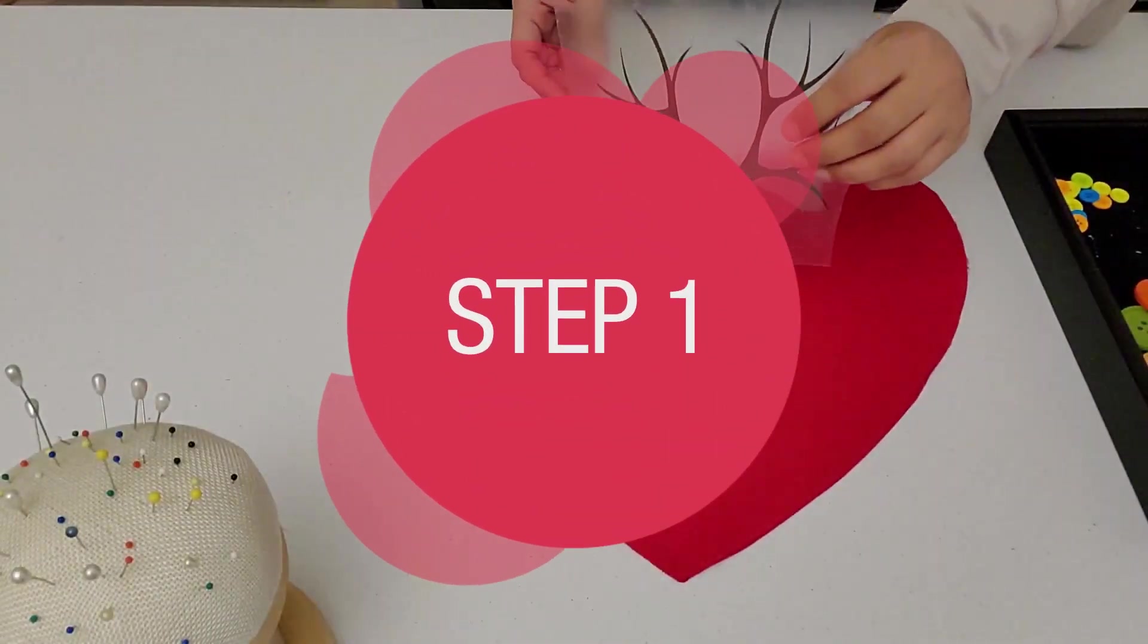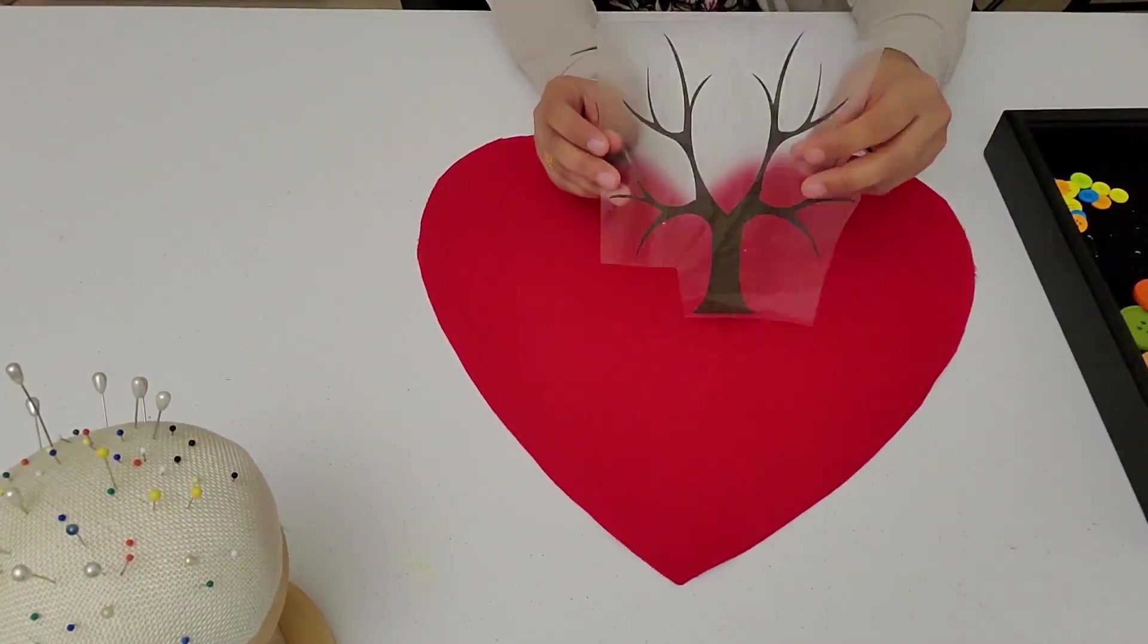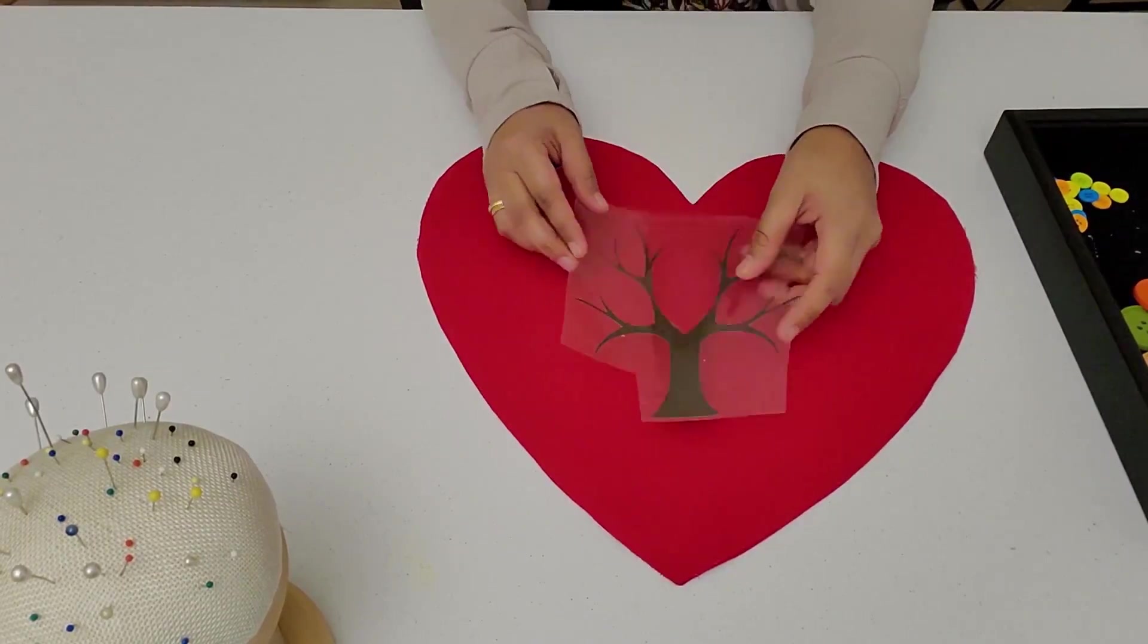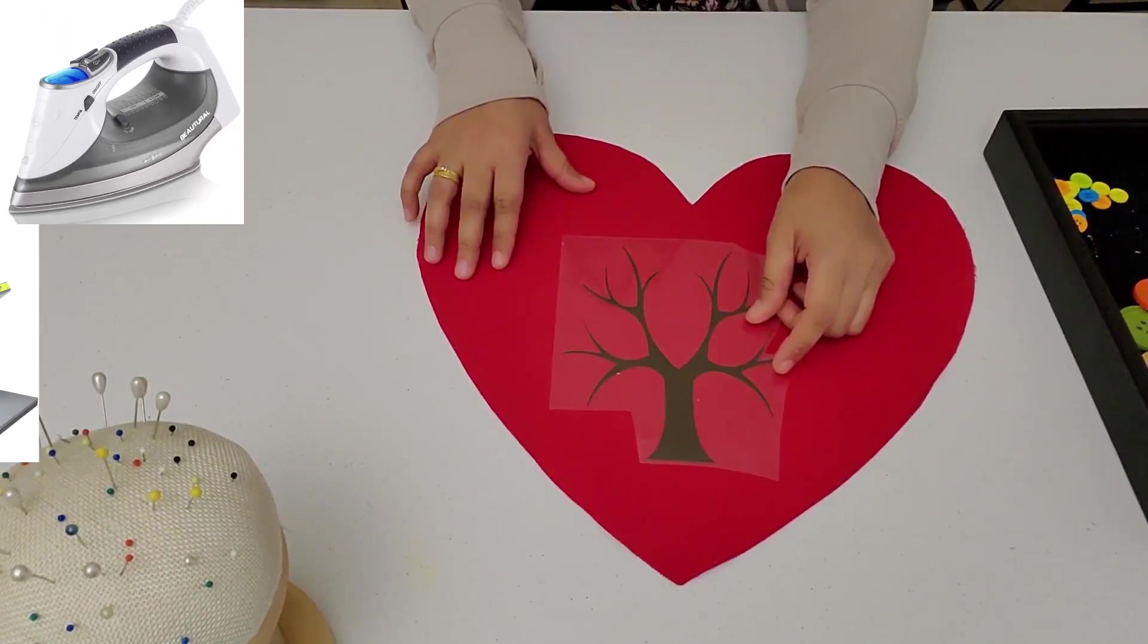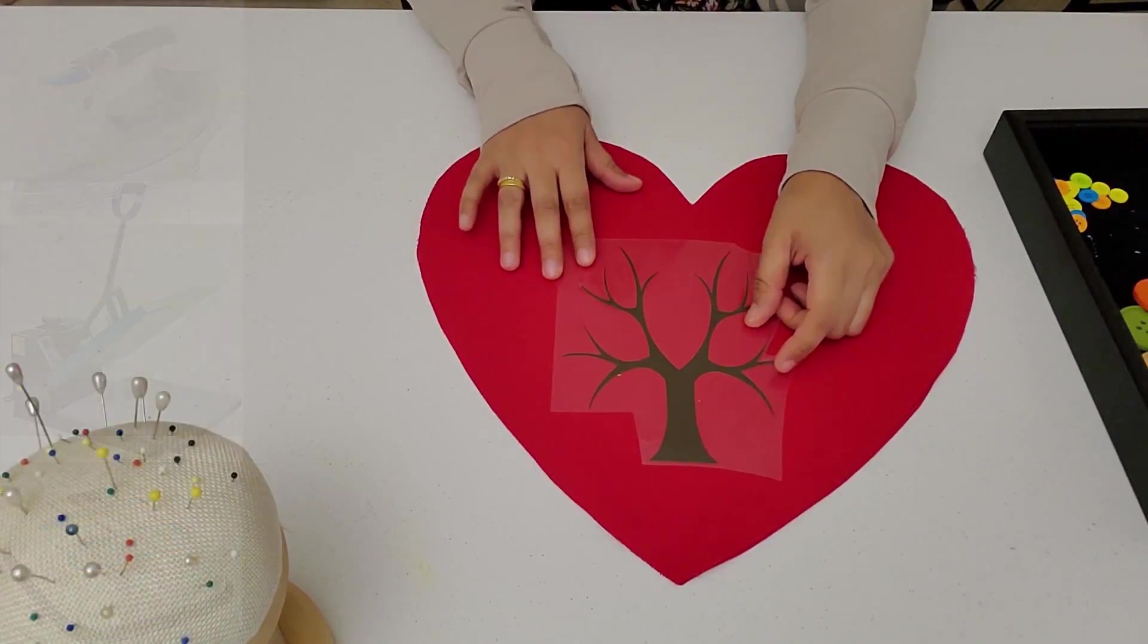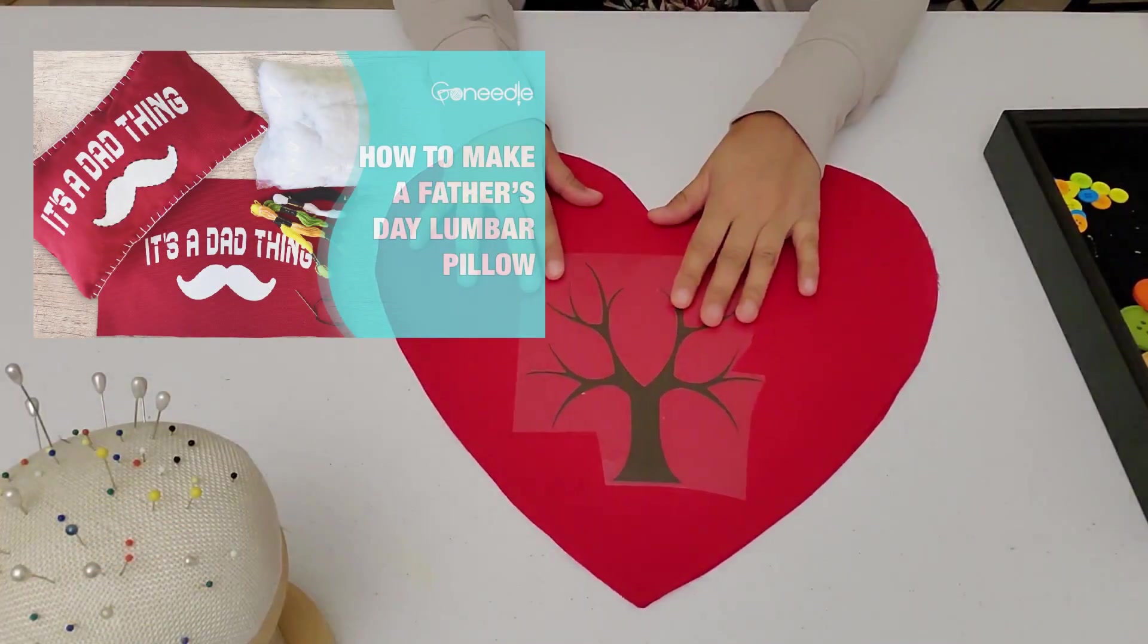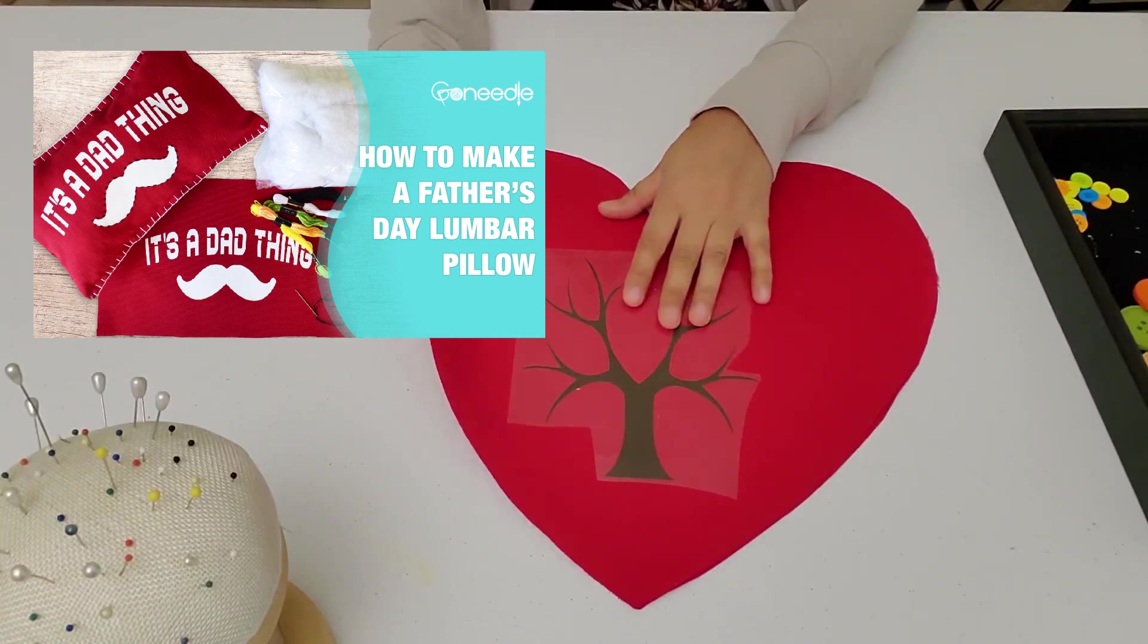First step is going to be transferring your decal. Your HTV decal will be transferred onto this fabric using your iron, heat press, or your easy press. On how to transfer the decal onto a fabric, refer to my video on how to transfer a decal onto fabric.